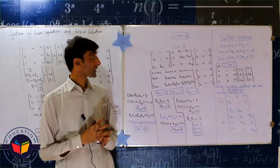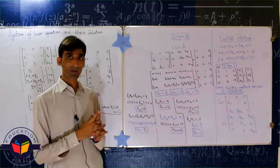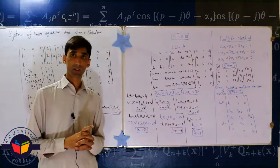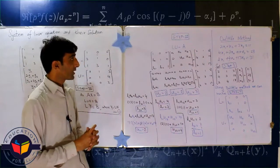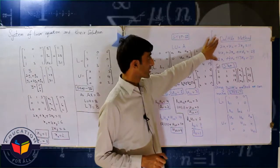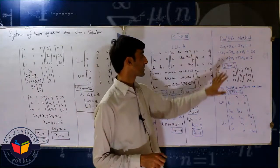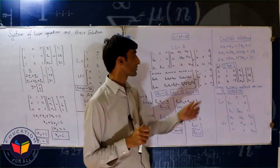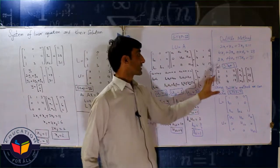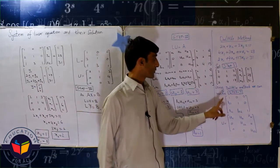Assalamu alaikum guys, this one is numerical analysis. In numerical analysis we study the system of linear equations and we find their solution of x1, x2, and x3 by using Doolittle method. For this purpose, first step is to write these equations in matrix form. This is the matrix form and now we decompose this matrix in two parts.